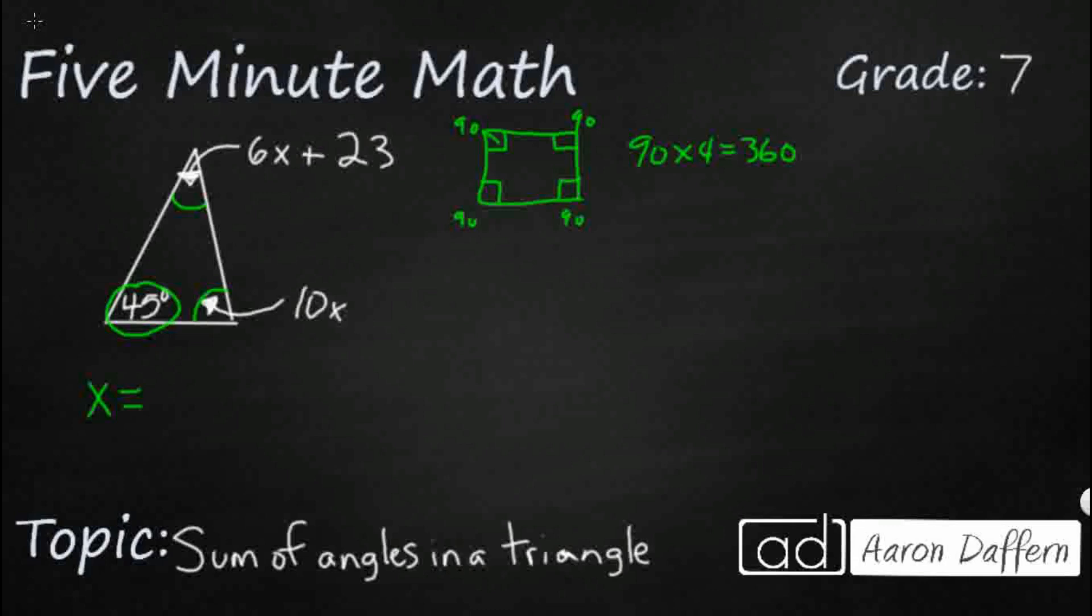You can take any quadrilateral. You can use a diagonal to cut it in half, and guess what you have? A triangle. And a triangle is going to be half of a quadrilateral because you can just take that quadrilateral, cut it into two equal halves, and it's going to equal 180 degrees.